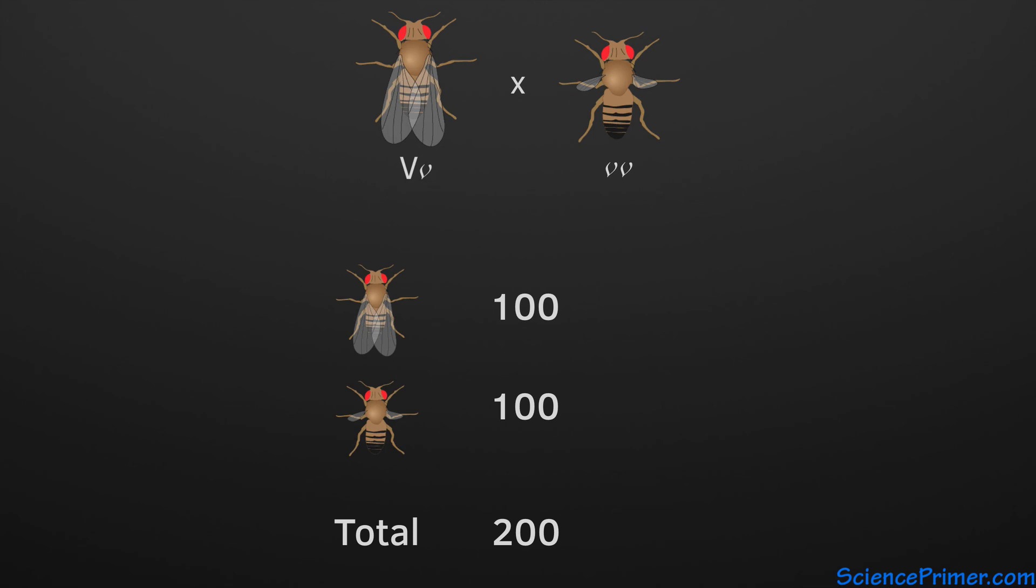To give a real example, students crossed a homozygous recessive individual with a fly exhibiting the wild-type phenotype but an unknown genotype. Of the first 180 flies that hatched from the cross, 96 had the wild-type phenotype and 84 had vestigial wings. This ratio of 53% to 47% is close enough to 50-50 to prove that the wild-type parent is heterozygous for this trait.